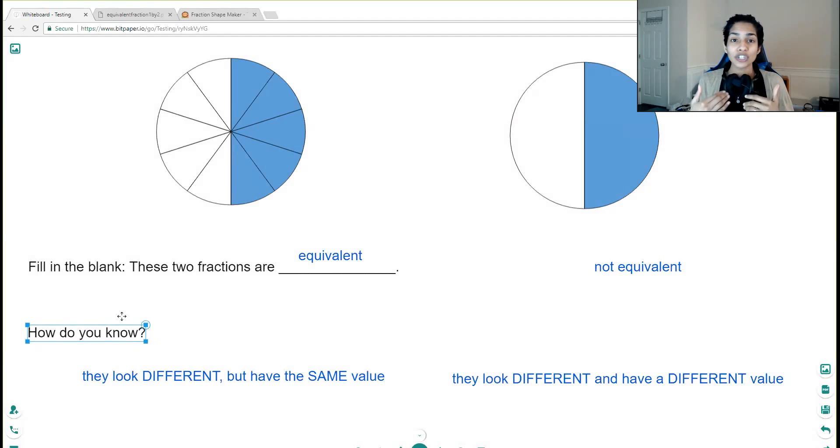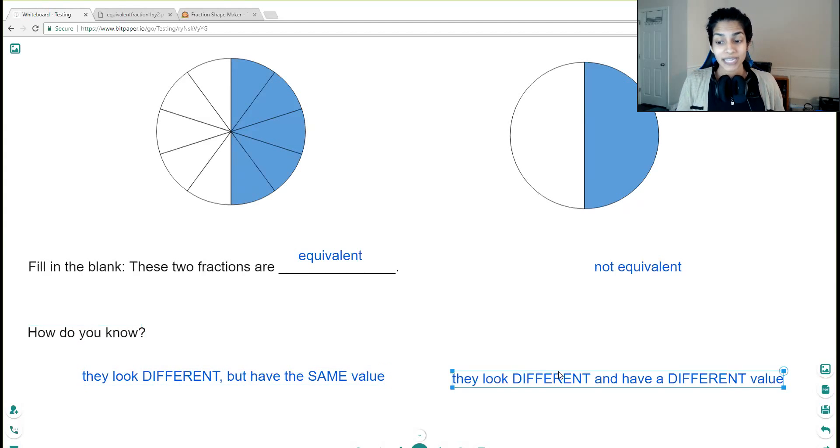So when I was a child, it was all about the rule and just solving it, getting the answer, sometimes using a trick, not really understanding why something works the way it does. But now with Common Core, we really need to look at the why and think about it. So I gave her two options, and the options are they look different but have the same value, or they look different and have a different value.